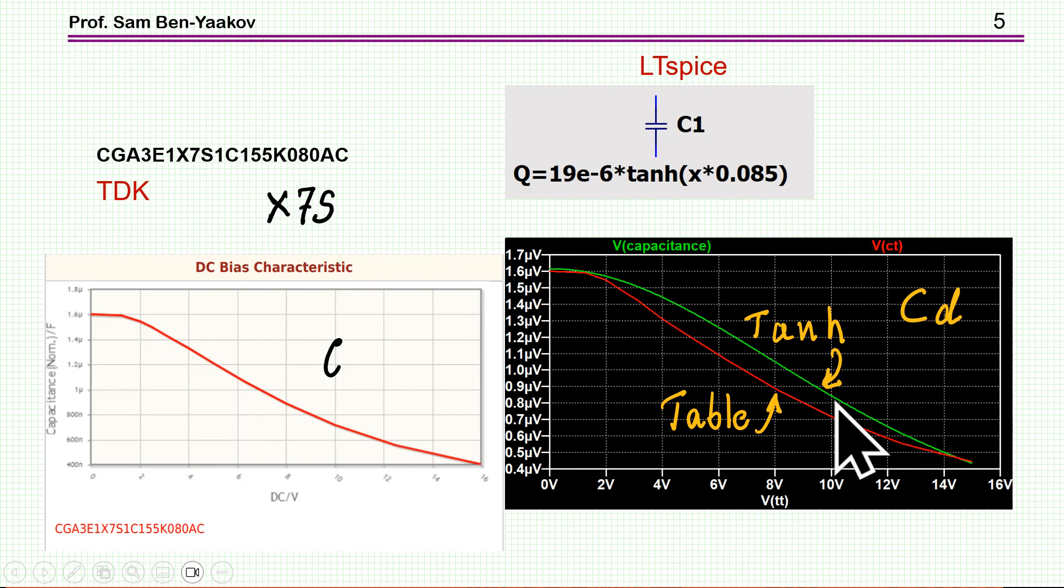First of all, let me talk about simulation and how do we simulate a nonlinear capacitor in this case. There is a very nice way to do it in LTspice. You can define a nonlinear capacitor by actually defining the charge by a nonlinear equation. In this case, the tangent hyperbolic function is very nice. And this is a function of X, and X is the voltage across the capacitor. Tangent hyperbolic is a very nice function, very similar to the QV curve. Another way is to use a table.